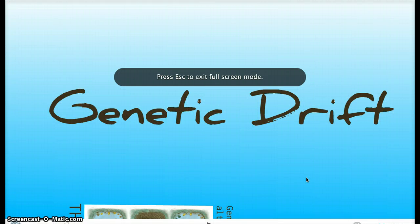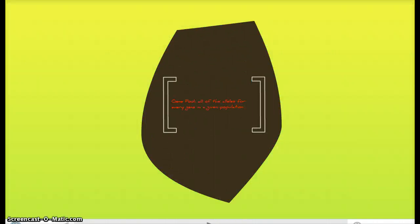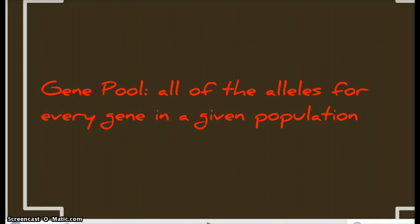Okay guys, welcome to the virtual lecture for genetic drift. As you may know, this is Chapter 24, Section 4. Let's jump right into it. So a quick review: what is a gene pool? A gene pool is all the alleles for every gene in a given population.